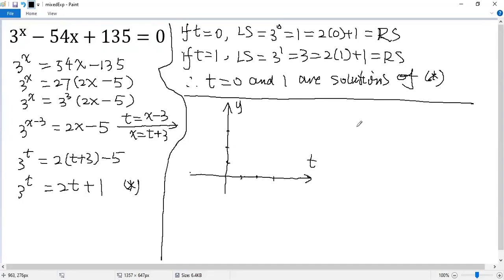Let's see the left side function. Y equals 3 to the power of t. It is an exponential function. When t equals 0, y equals 1. When t equals 1, y equals 3. So it passes through these two points and the graph would look like this.